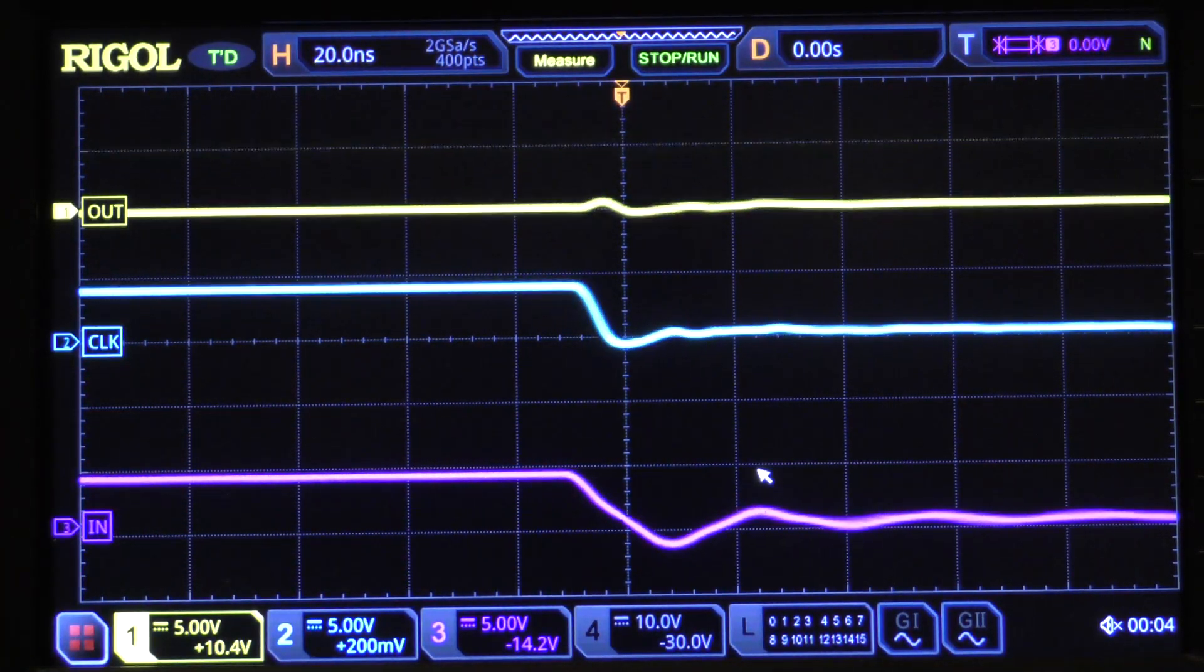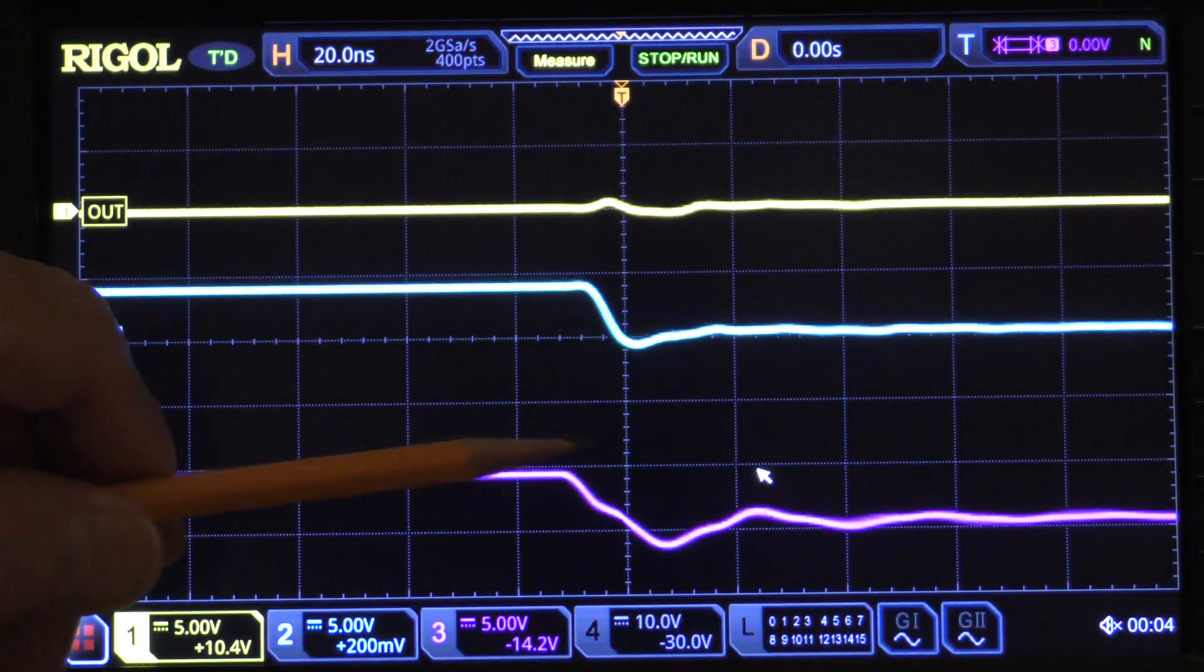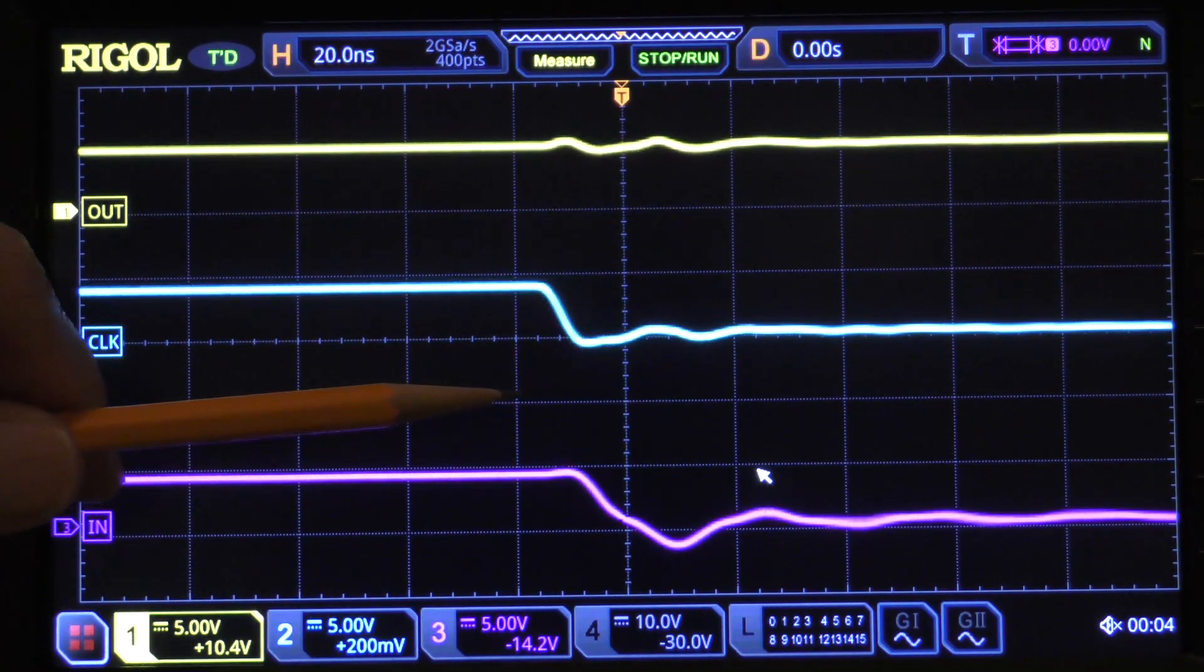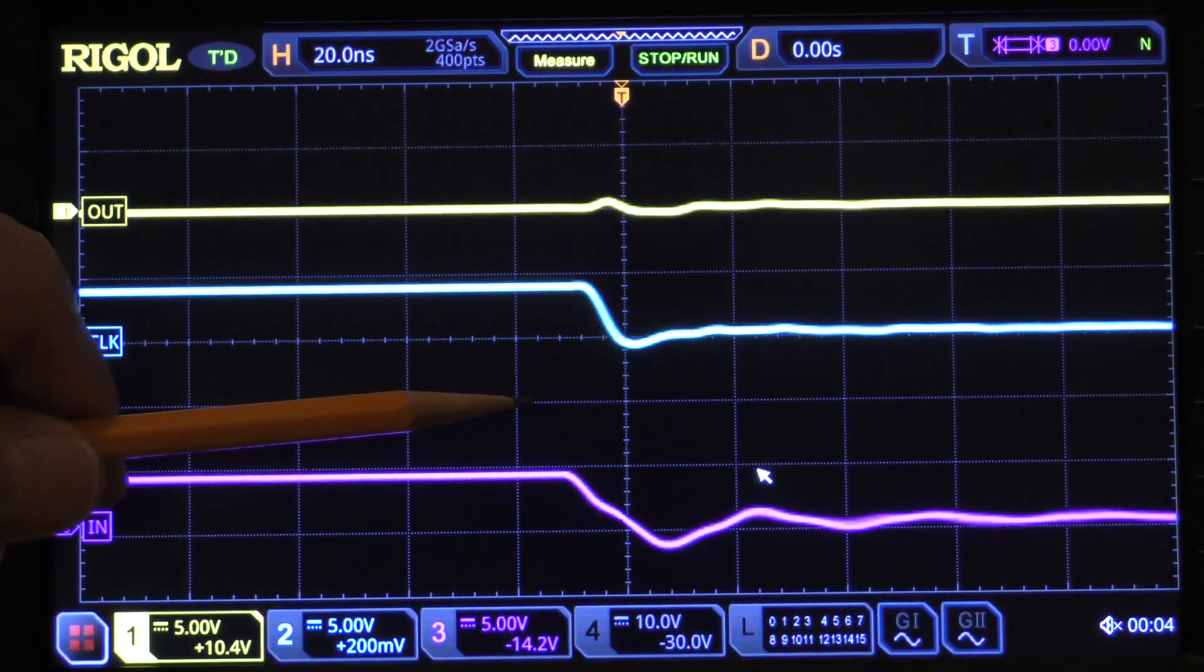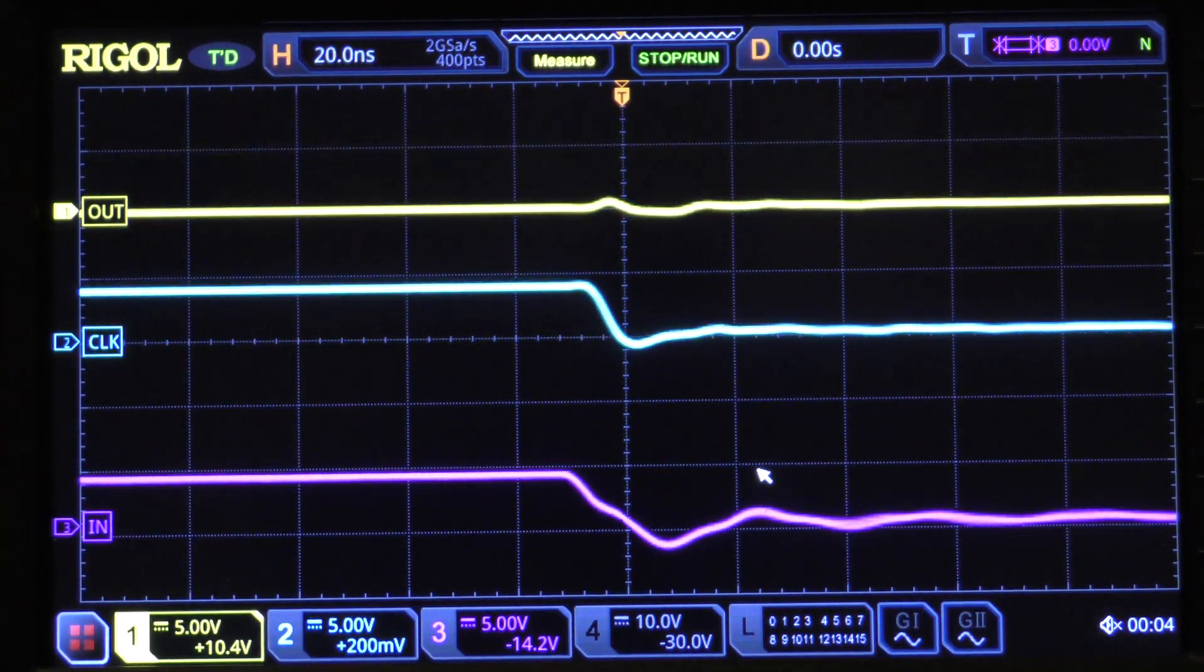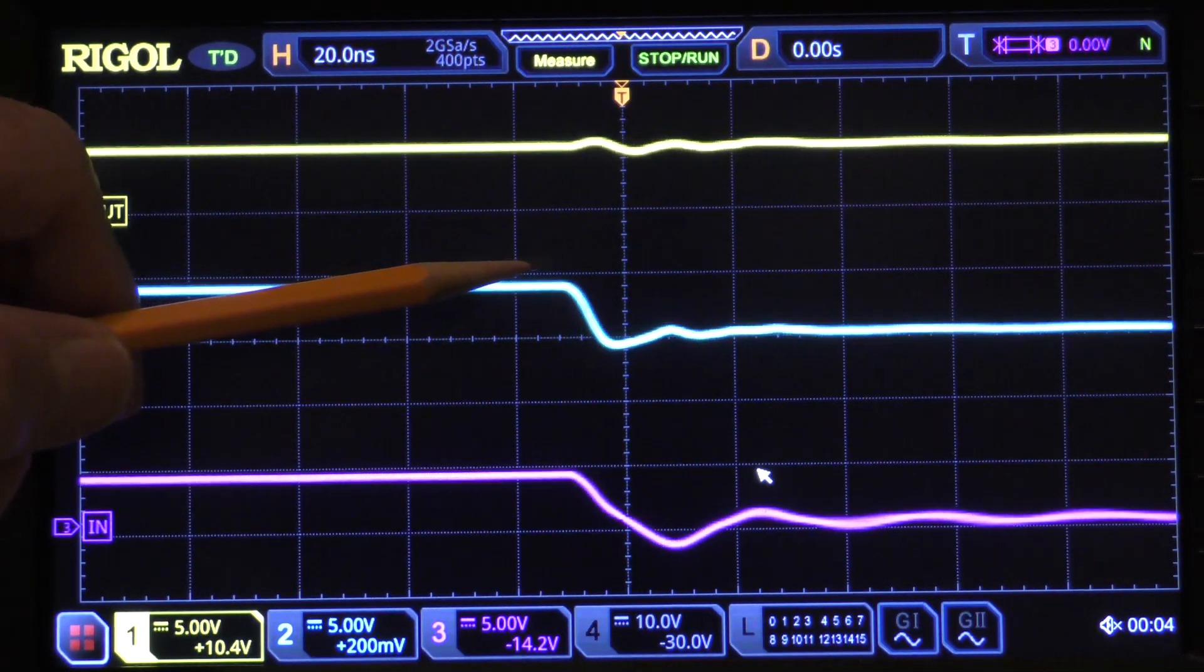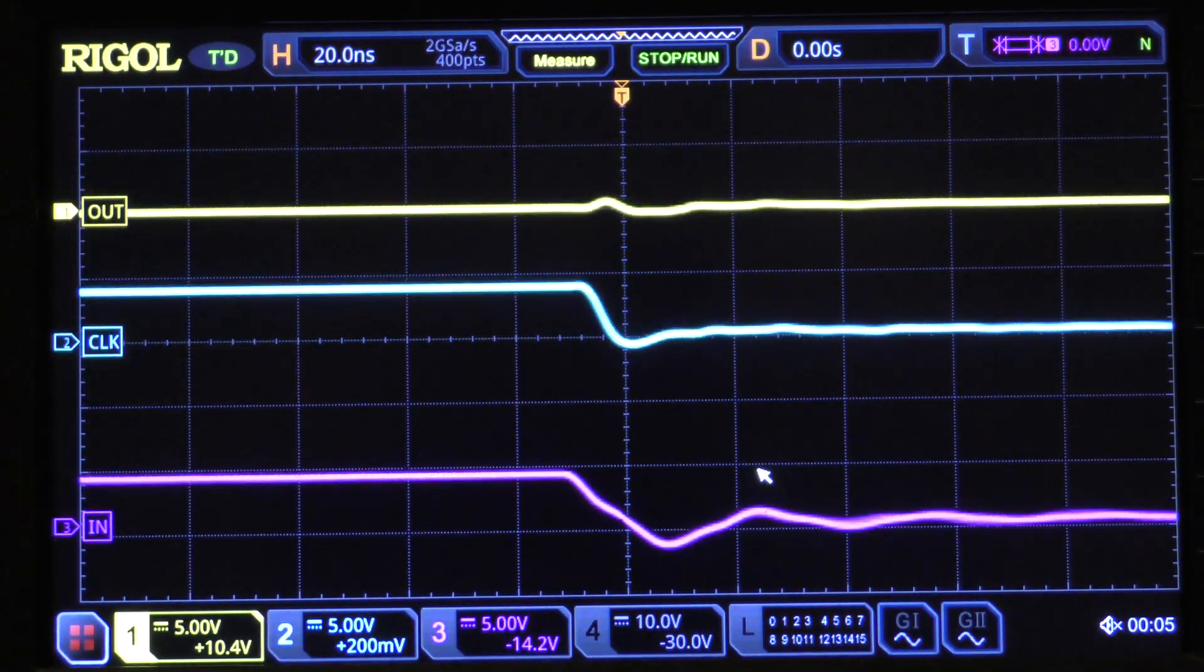I suspect, and this is a Tektronix demo board that I'm using for this, that they did this deliberately so that you would see that when you have a long fall time relative to the clock transition time, you can get into trouble, especially if you have a clock, like this one, that jitters.